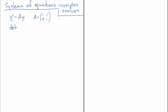We start by finding the eigenvalues by calculating the determinant of A minus lambda I. For two by two matrices this is easy to write down: we get lambda squared minus the trace of A, which is 2, times lambda, plus the determinant of A, which is 1 minus minus 4, giving 1 plus 4 equals 5.